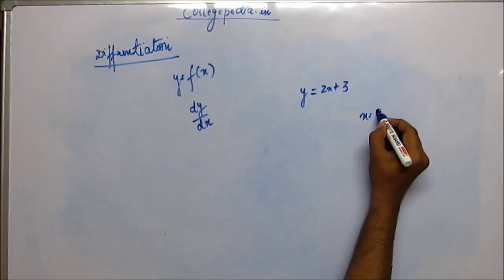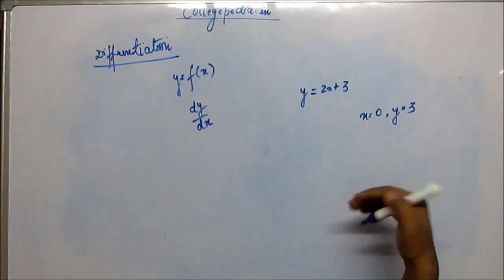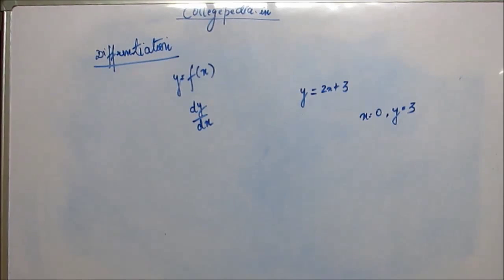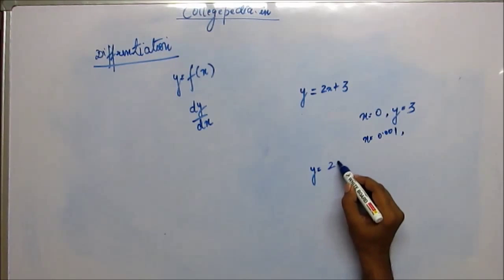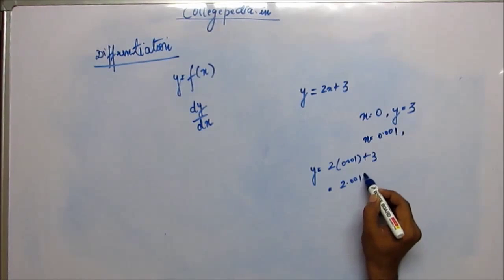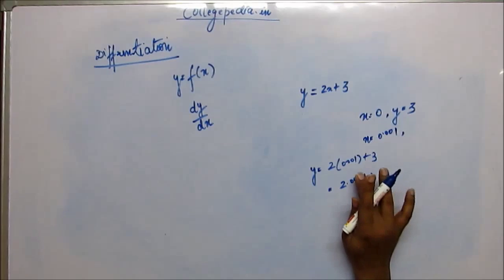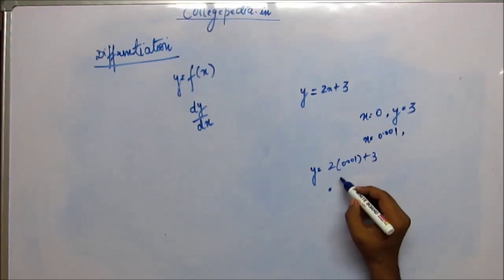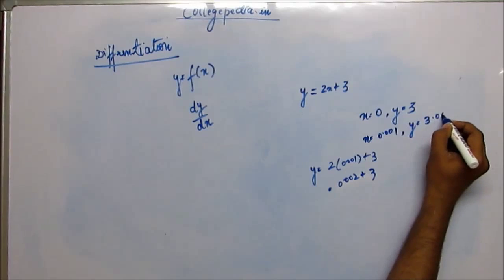At x is equal to 0, y is 3. Now, when we increase the value of x, correspondingly the value of y will also increase. For example, if we make x equal to 0.001, then y will become 2 times 0.001 plus 3, which is 0.002 plus 3. So y will become 3.002.